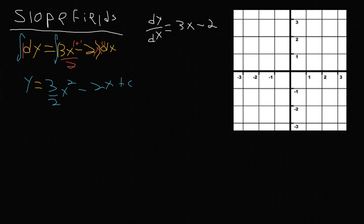But now we're going to sketch the slope fields. This integration, while it could be important just to kind of show the original function, is not important for sketching the slope fields. Because what the slope field is, is just showing the slopes at every given point. And what we're going to do is plot each of these points on the coordinate plane — I'm probably only going to do up to about 2.